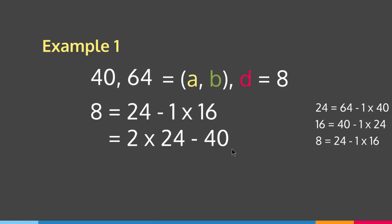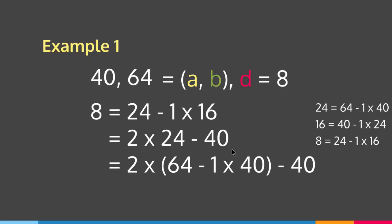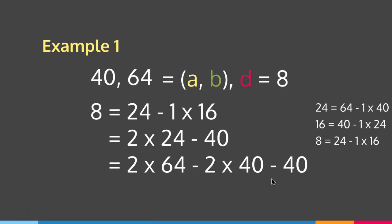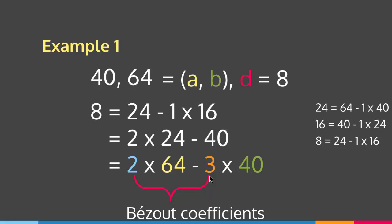Substituting 24 equals 64 minus 1 times 40, we get 2 times (64 minus 1 times 40) minus 40. Simplifying: 2 times 64 minus 2 times 40 minus 40, which equals 2 times 64 minus 3 times 40. So x equals 2 and y equals -3 are the Bézout's coefficients. That is how you find Bézout's coefficients using the extended Euclidean algorithm.